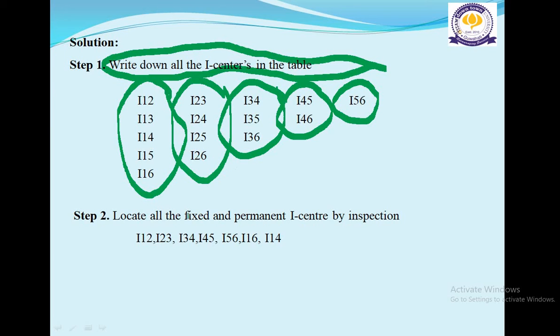Step 2: We need to locate all the fixed and permanent I-centers by inspection. By inspection, we have observed the fixed and permanent I-centers: I12, I23, I34, I45, I56, I16, and I14.